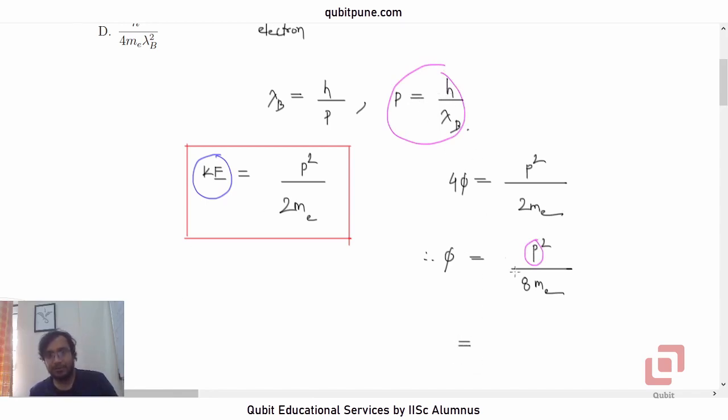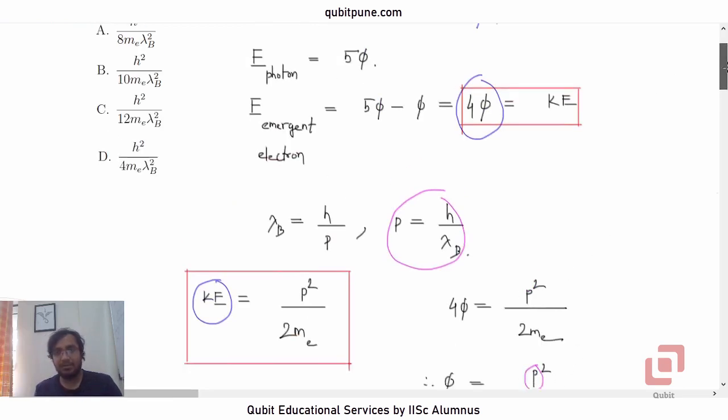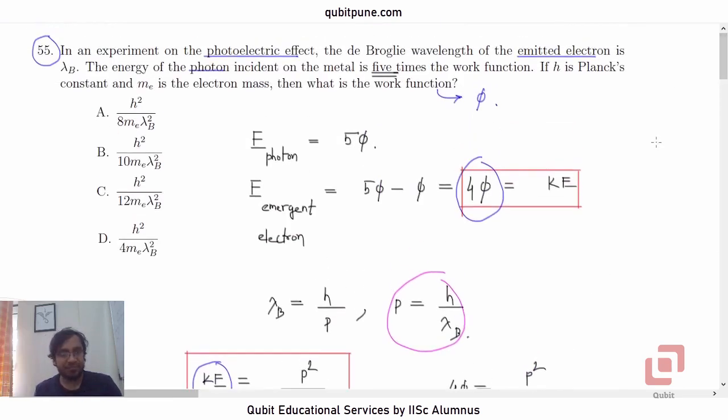So, p squared will be h squared upon lambda b squared. So, 8me lambda b squared in the denominator.